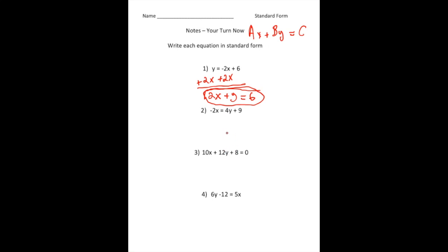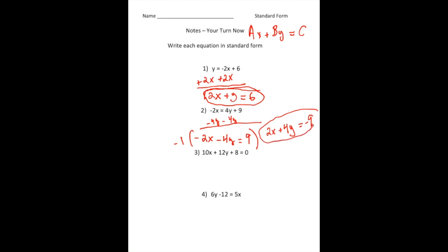Number two: we have negative 2x equals 4y plus nine. I'm going to take away 4y from both sides. So now we have negative 2x minus 4y equals nine. But remember, the A value — in this case, negative two — can't be negative. So the way you get around this is you take the whole equation and multiply the whole thing by negative one. As long as you do that to both sides, it's still equivalent. Negative one times negative 2x gives us 2x, negative one times negative 4y gives us positive 4y, and negative one times nine gives us negative nine. So there's the equation written in standard form: 2x plus 4y equals negative nine.